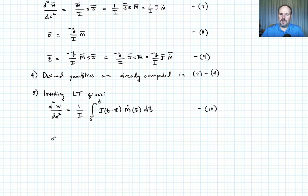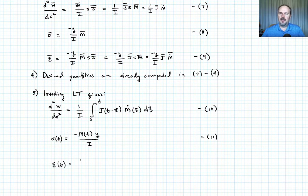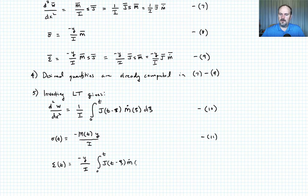Inverting the stress equation gives simply σ(t) equals negative M(t)·y over I — equation eleven, identical to the elastic solution. For strain, the inverse Laplace transform gives ε(t) equals negative y over I times the integral from 0 to t of J(t−ξ)·Ṁ(ξ) dξ — equation twelve.